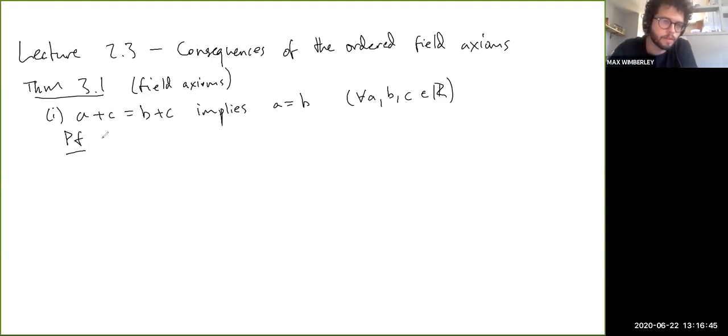So if we suppose a plus c equals b plus c, then let's add negative c. So a plus c plus negative c equals b plus c plus negative c. Notice how I'm being very careful with the parentheses here. This is just saying we're not using an axiom to actually get to this point. You're always allowed to do the same operation to both sides of an equation. That's just sort of philosophically true.